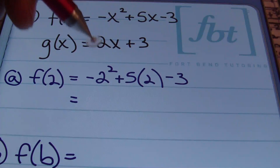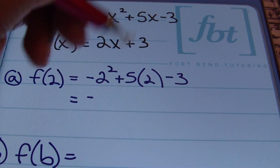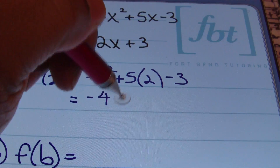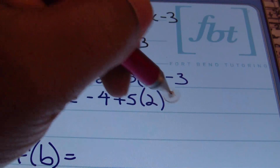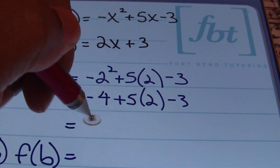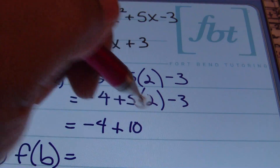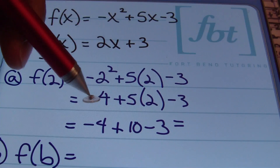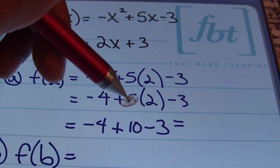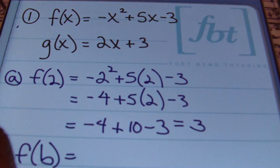The next thing I need to do is use the order of operations to simplify. Starting with the exponents first: negative 2 squared means 2 times 2, so that's negative 4 plus 5 times 2 minus 3. My next step is to multiply: negative 4 plus 5 times 2, which is 10, then minus 3. Simplifying further, negative 4 plus 10 is positive 6, and 6 minus 3 gives a positive 3 as an answer.